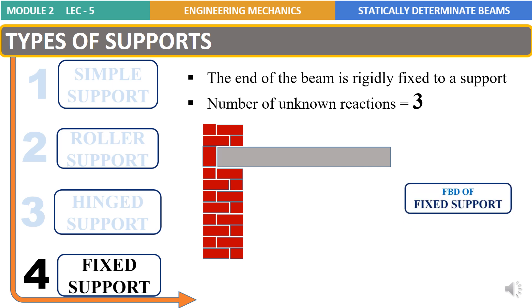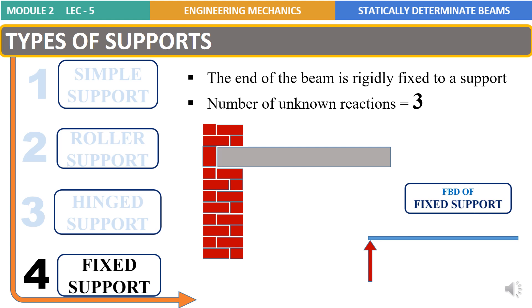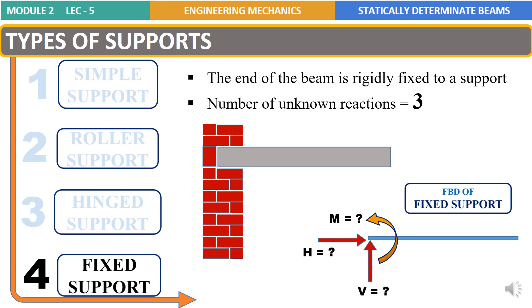Looking into the free body diagram of the fixed support, the beam has a vertical reaction V, a horizontal reaction H, and a reaction due to moment M as unknowns. That is, the total number of unknown reactions for a fixed support is equal to 3.